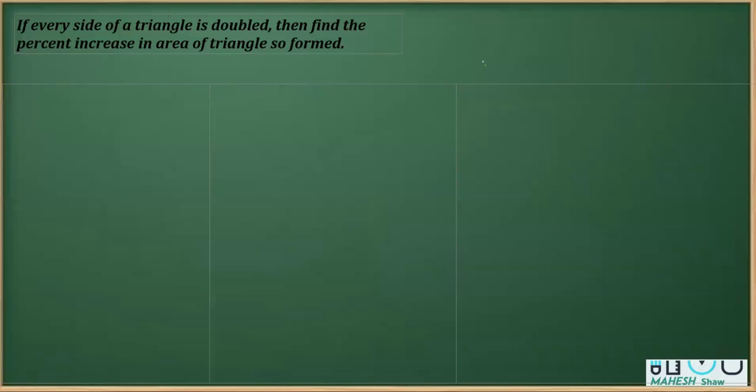In this video, I'm going to solve one question from the chapter Heron's formula. It says if every side of a triangle is doubled, then we have to find the percentage increase of the area of the triangle after doubling the two sides.